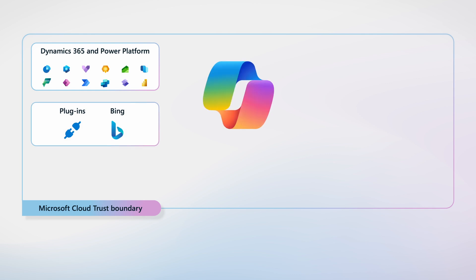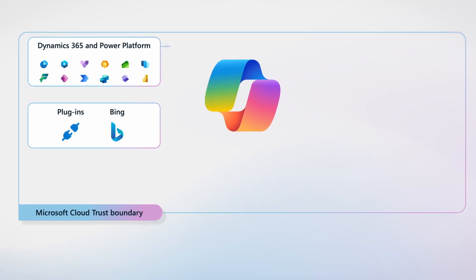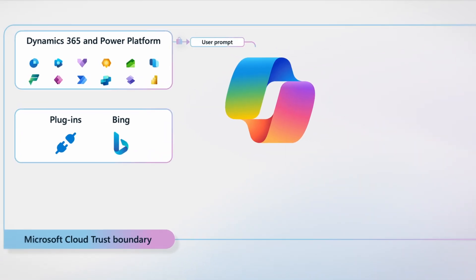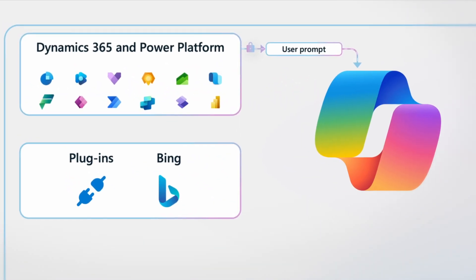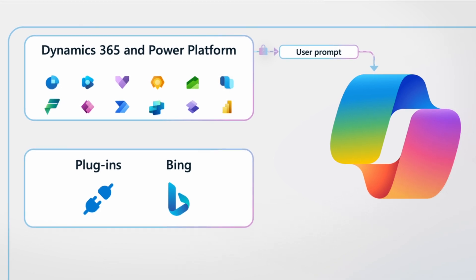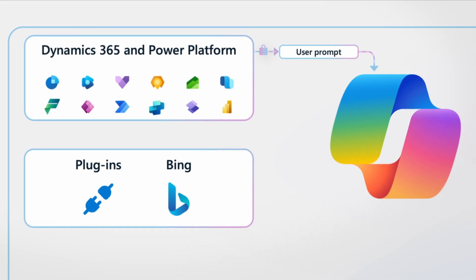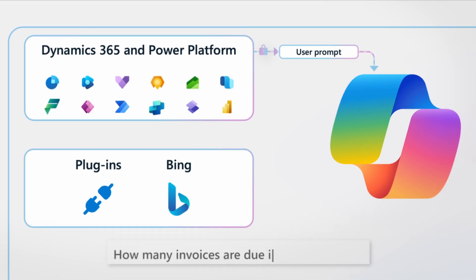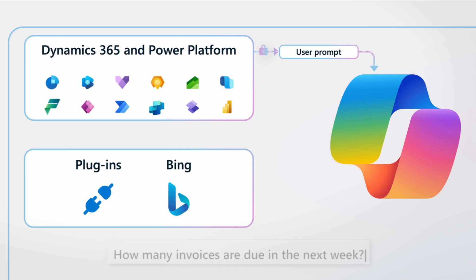First, the Copilot receives a prompt from a user within Dynamics 365 and Power Platform. This prompt could be in the form of a question that the user types into the chat pane, or in the form of an action such as selecting a button labeled 'create an email.'